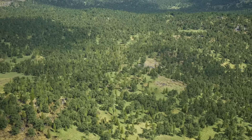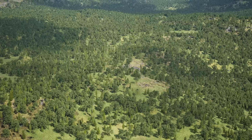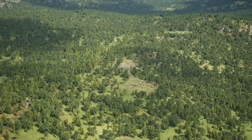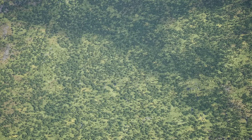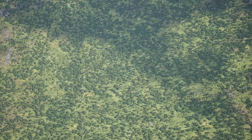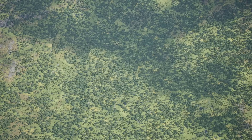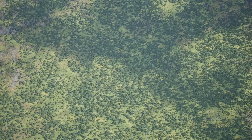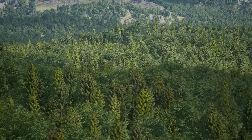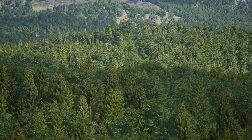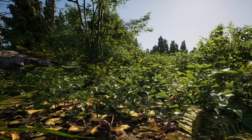I wanted to push the limit of Nanite foliage, so I created a forest that is 4 square kilometers. In total, there are over 100,000 trees in this environment, and I'm still getting decent performance. And as a reminder, this is all in real time — this level of density was only possible in pre-rendered movies. Also, it makes life easier because we no longer need several different versions of an object for LODs.